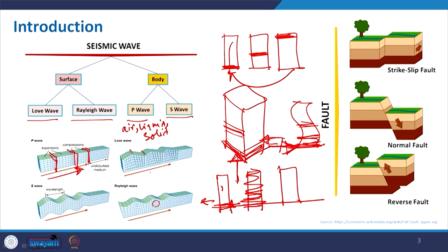Coming to the love wave: it is a movement of the soil where a portion shifts from one place to another with some lateral displacement. The Rayleigh wave involves a rotational motion that forms a wave and expands. During an earthquake, all of these wave types happen together, creating a repetitive and very fast shaking motion on the earth's surface.